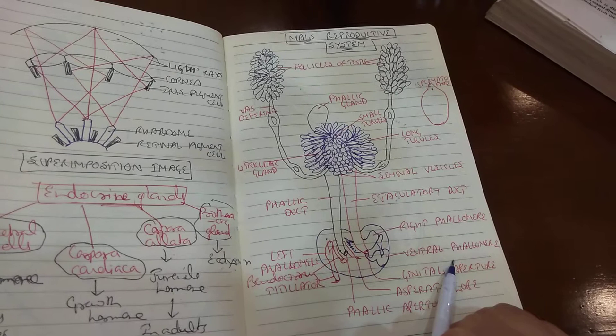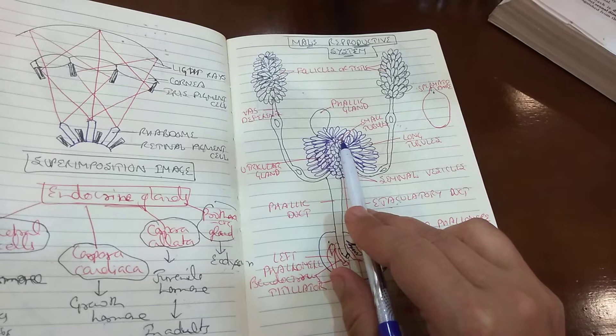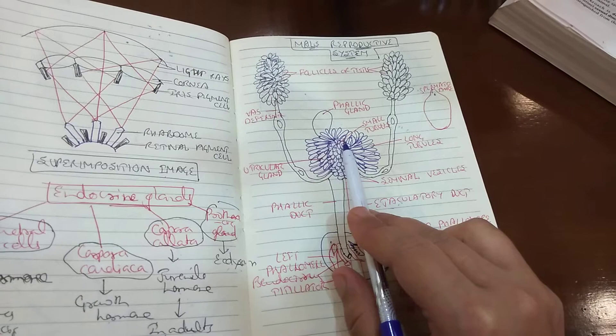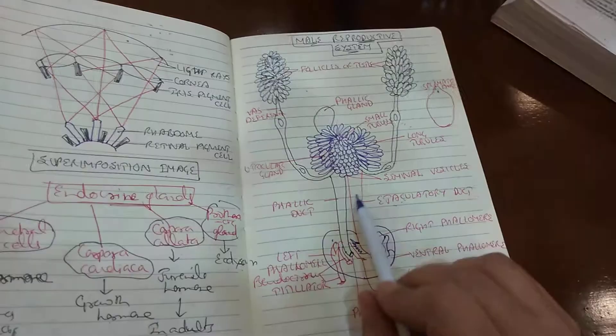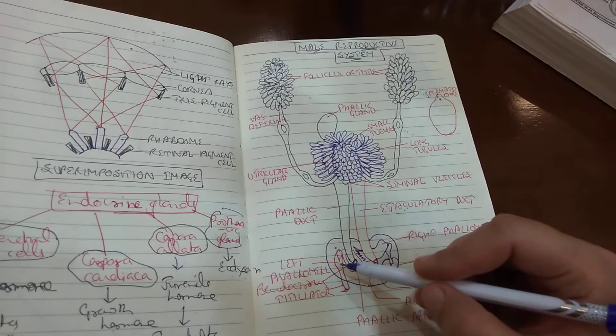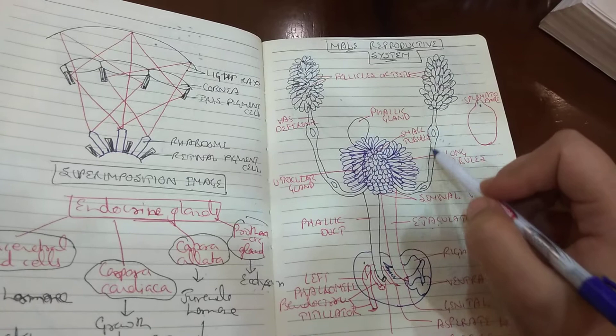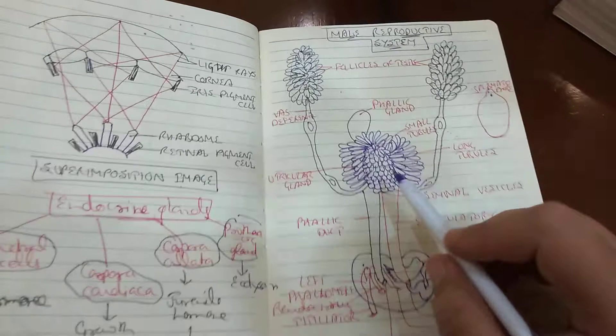The phallic gland lies interior to the accessory gland, beneath the ejaculatory duct. It tapers posteriorly to form the phallic duct. The secretion of the phallic duct forms the outer layer of the spermatophore wall. The follicles produce spermatozoa which are carried through vas efferens, then vas deferens, into the seminal vesicles where they are stored.